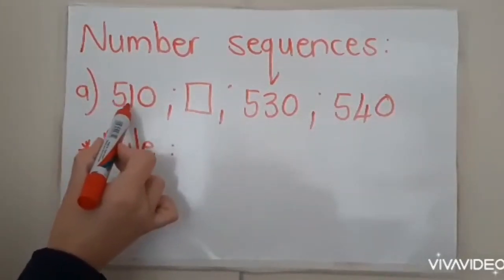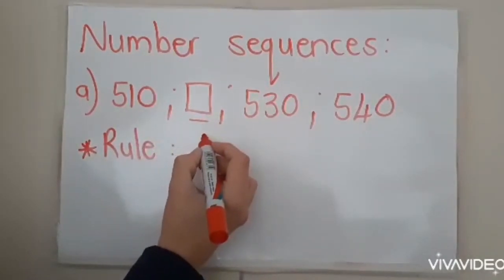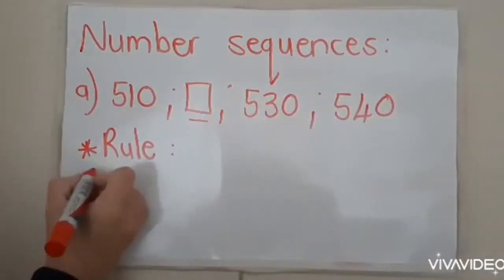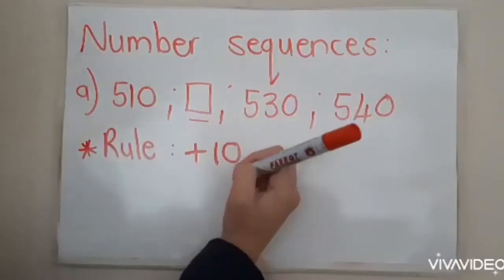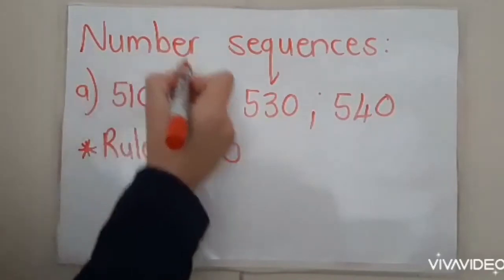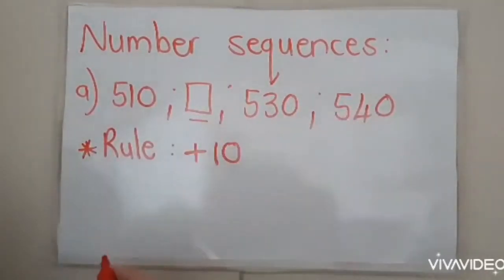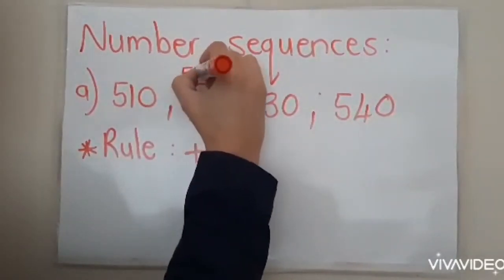It goes from 510, then it skips one, 530, 540. So I would say that my rule is we add 10 every time. 510, 520, 530, 540. So actually, my answer here should be 520.